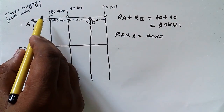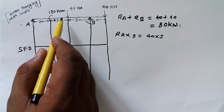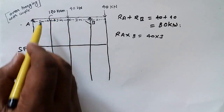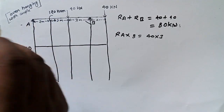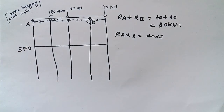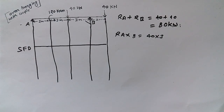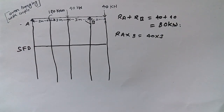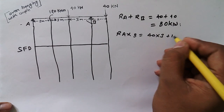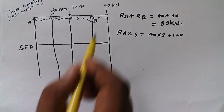Now we have to include the couple here. There are two ways a couple can act on a beam: clockwise and anti-clockwise. If the direction is clockwise, it is a clockwise couple; if the direction is anti-clockwise, it is an anti-clockwise couple. This couple is acting in the anti-clockwise direction, so we will add 120 to the moment equation.